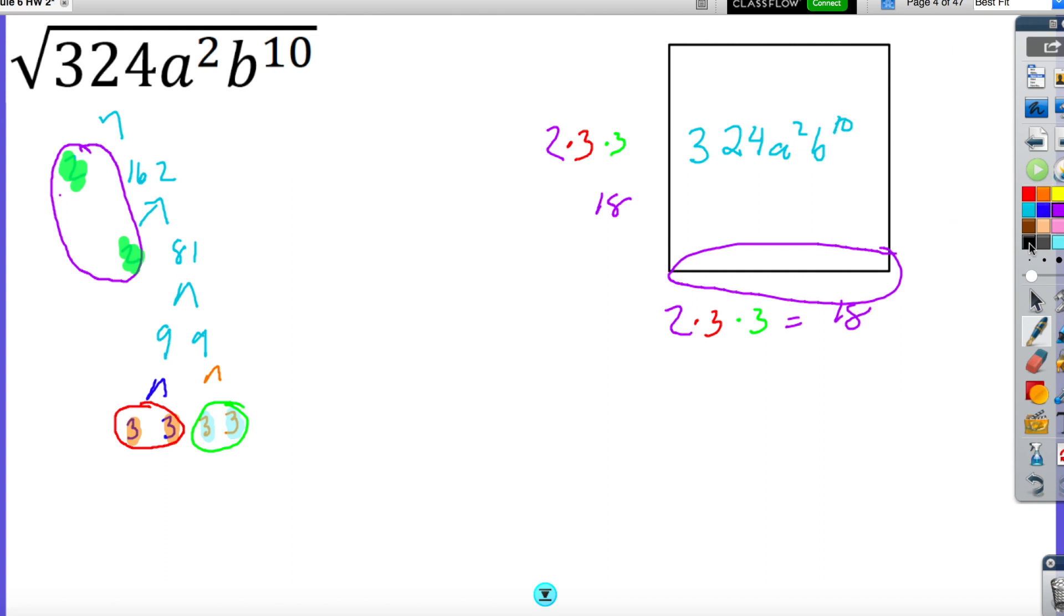But we have one other part. We have the exponents here. You could write this out like a times a. If I had the square root of a squared, that is equal to the square root of a times a. I have one pair, so I can bring out an a. And then the last part, I really don't want to write out 10 bs. But remember, I'm looking for groups of 2. So all I need to do is divide by 2. And 10 divided by 2 is 5. So this would be b to the fifth power. So my final answer of the square root of 324 a squared b to the tenth would be 18 a b to the fifth. This is my final answer.